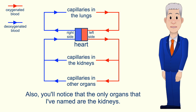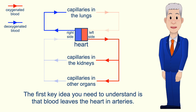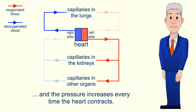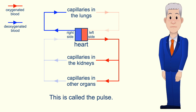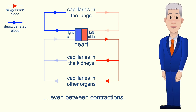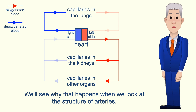You'll notice that the only organs I've named are the kidneys. The first key idea you need to understand is that blood leaves the heart in arteries. The blood in the arteries is under very high pressure and the pressure increases every time the heart contracts — this is called the pulse. It's important to understand that blood continually moves forward in arteries even between contractions, and we'll see why that happens when we look at the structure of arteries.